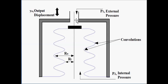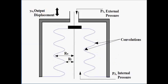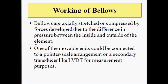When the external pressure is greater than the internal pressure, the bellows get compressed — this movable end or top end of the bellow moves downwards. This results in a displacement of the movable end of the bellow. And when the internal pressure is greater than the external pressure, the bellows move upwards and expand. So either way the bellows can either be stretched or compressed.